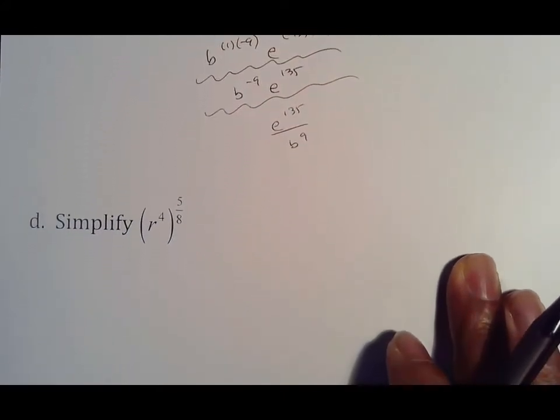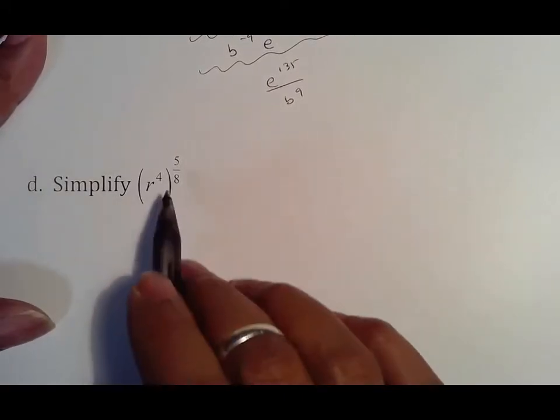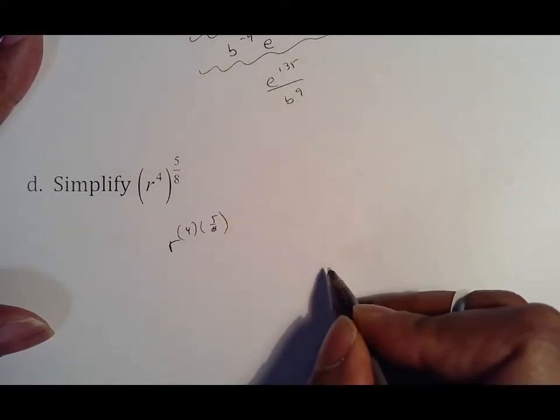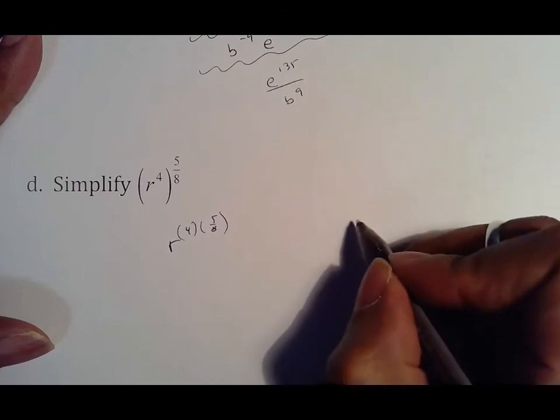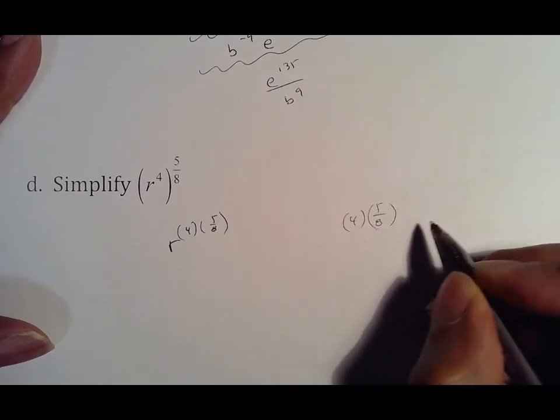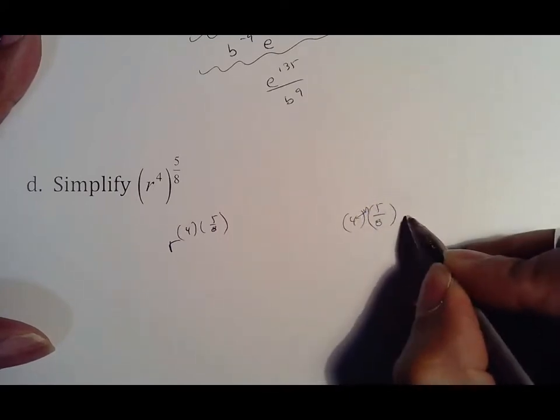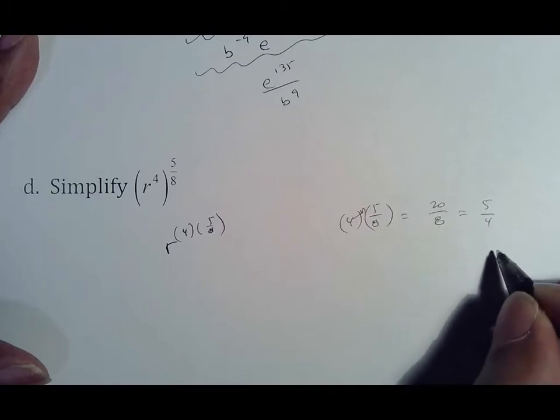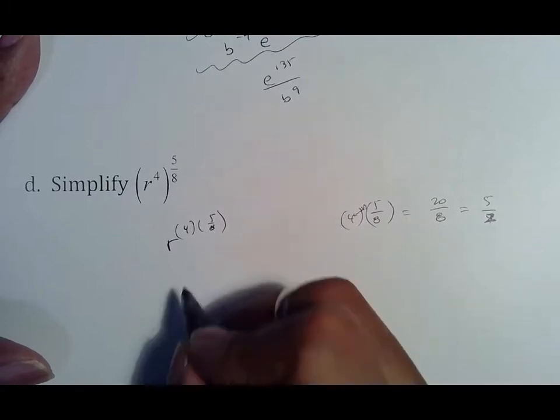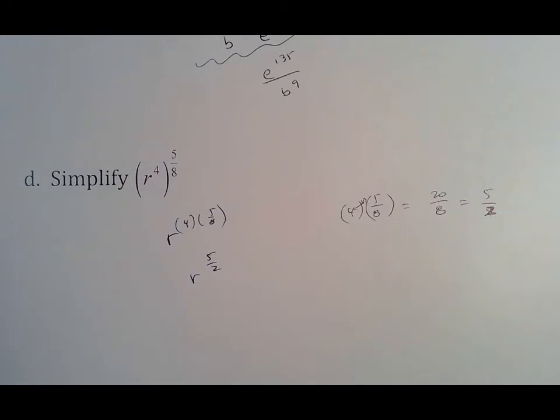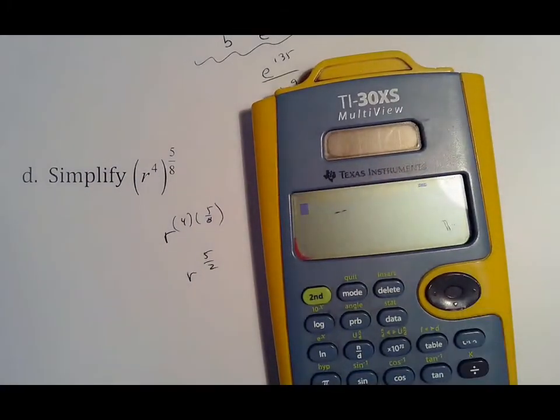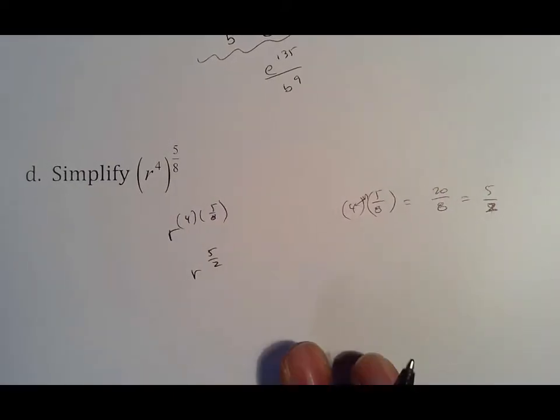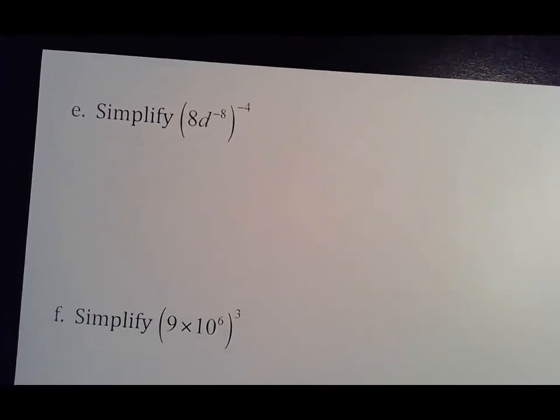Same thing here: r to the four to the five eighths power. That'll just be four times five eighths. I'm going to work this out the long way because I think it's good to know your fraction rules. Whenever you multiply a whole number by a fraction, you multiply the whole number to the top, which means that'll be 20 over 8, and then reducing that, both can be divided by 4, which means 5 over 2. So that'll be r to the five halves.